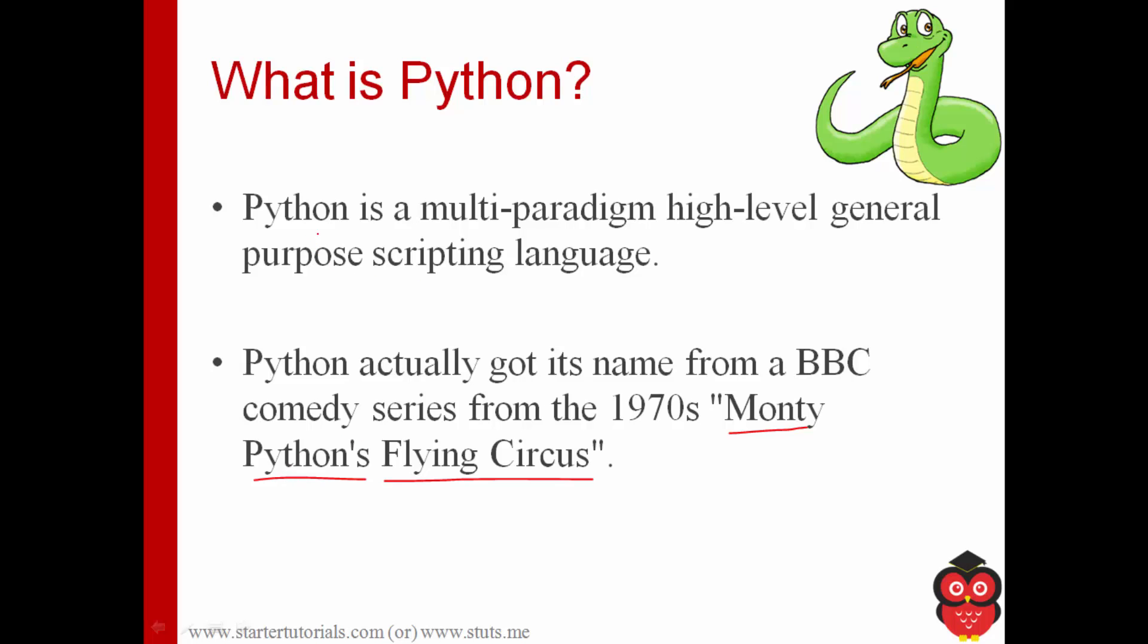And now definition of Python language. Python is a multi-paradigm, means it supports multiple programming models like object oriented programming, functional programming and also procedural programming. It is a high level language, it is user friendly and it's a general purpose language. In the sense, you can develop pretty much anything using Python. And finally it's a scripting language.